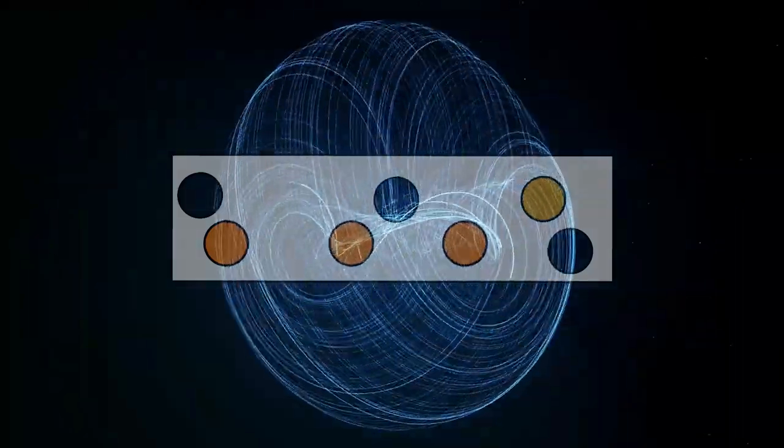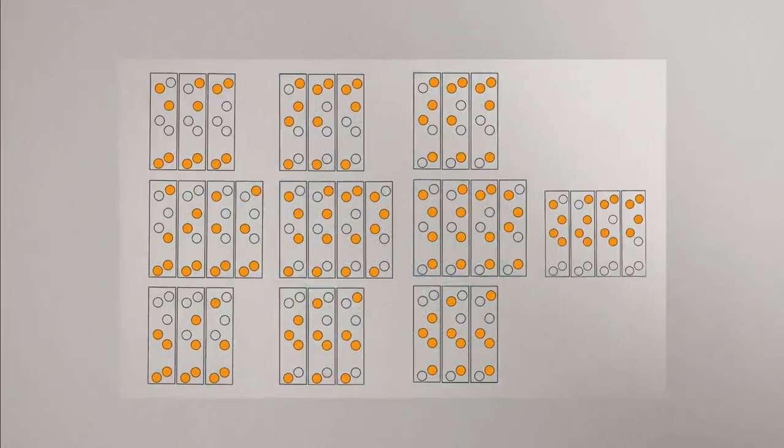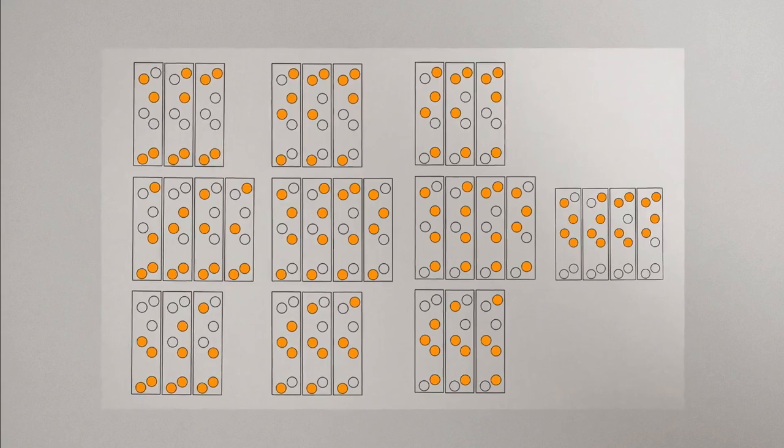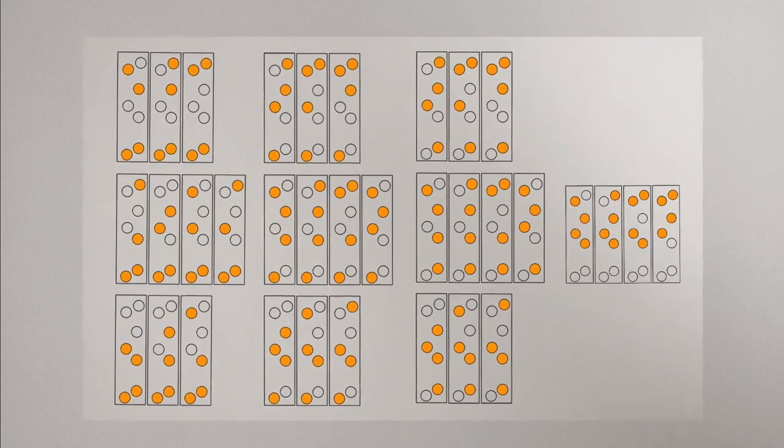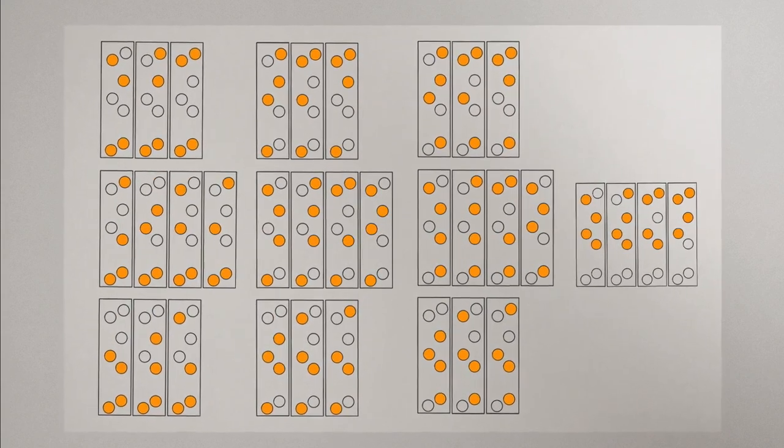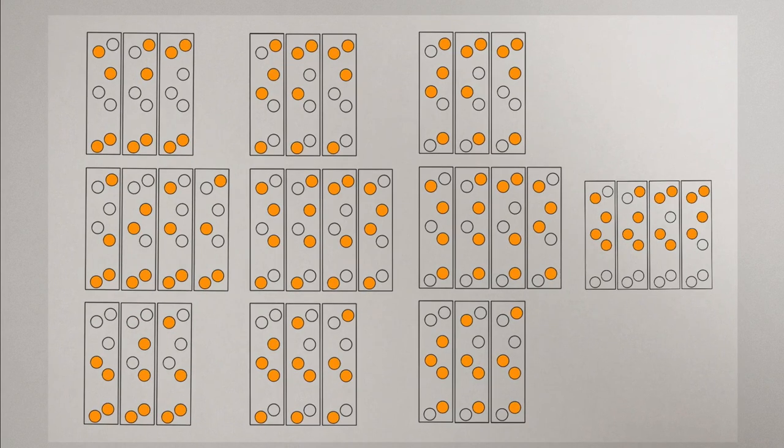So if I've calculated this correctly, there are 34 possible arrangements of the four magnets, which are as follows - and feel free to pause the video if you want to see if I've missed any. Believe me, this took quite some time.